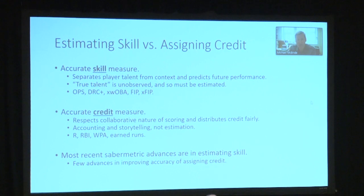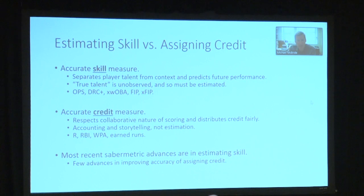But there are also other measures of importance in baseball history that are better called credit measures. A credit measure, to be a good one, needs to accurately reflect the collaborative nature of scoring and distribute the credit for any scoring or wins that happen in a fair way. This is not estimation — this is accounting. It's part of the storytelling of what happens in a game. Some credit measures include runs, RBIs, win probability added, and earned runs.